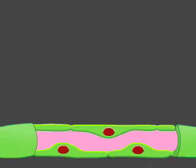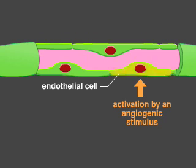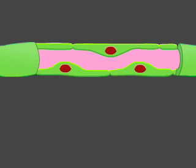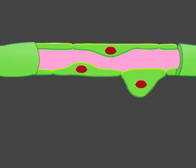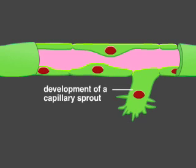The process begins when an endothelial cell of a small vessel is activated by an angiogenic stimulus, such as vascular endothelial growth factor, or VEGF. In response to the stimulus, the endothelial cell becomes motile and extends filopodia that guide the development of a capillary sprout.